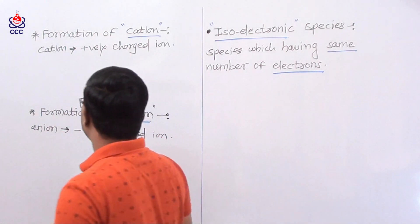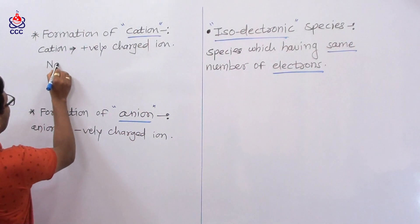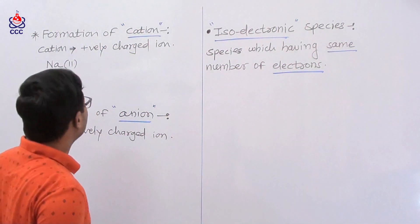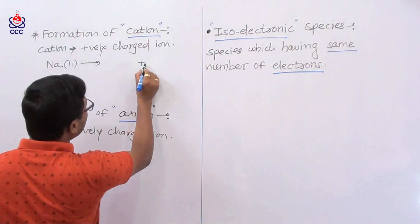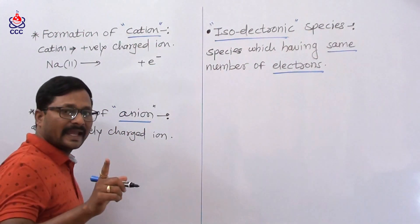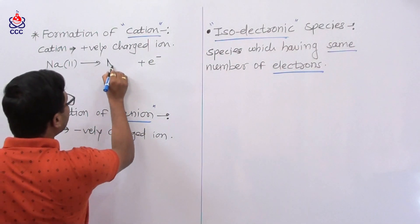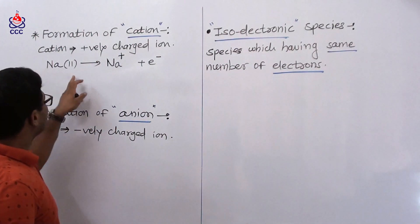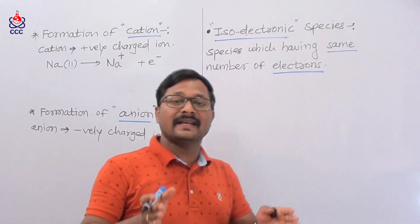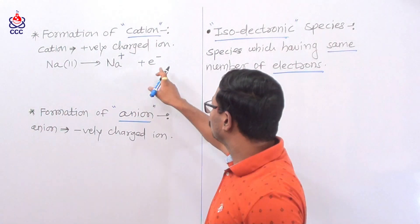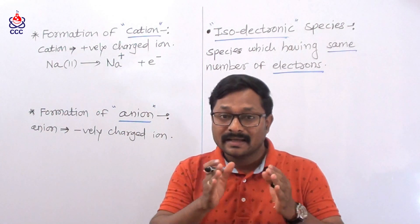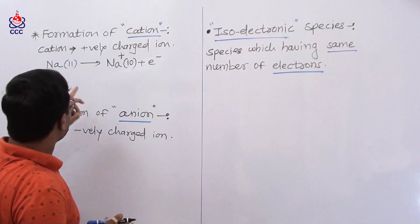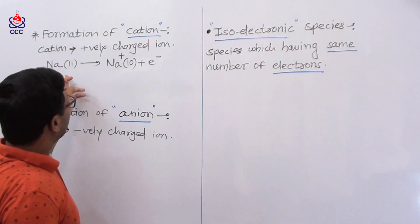For example, in the case of sodium — sodium has atomic number 11. If sodium loses one electron, then sodium forms Na+ ion. When sodium is in the atomic state, it has 11 electrons, and when it loses one electron, the Na+ ion has 10 electrons — because out of 11 electrons, sodium loses one.